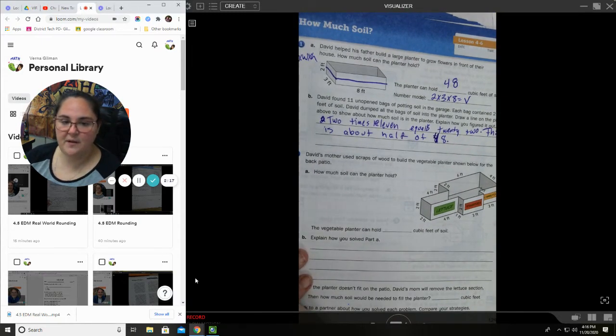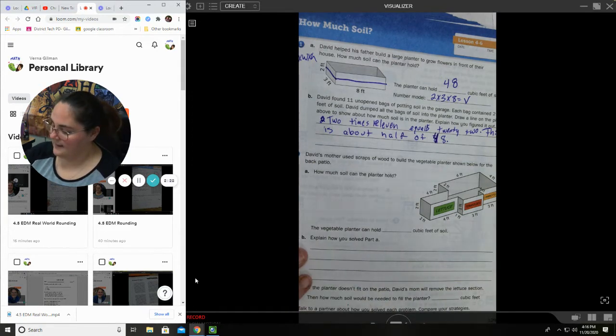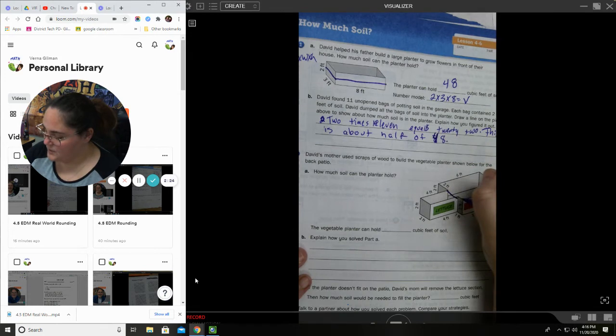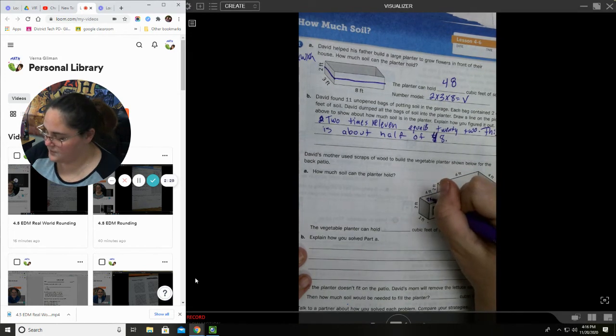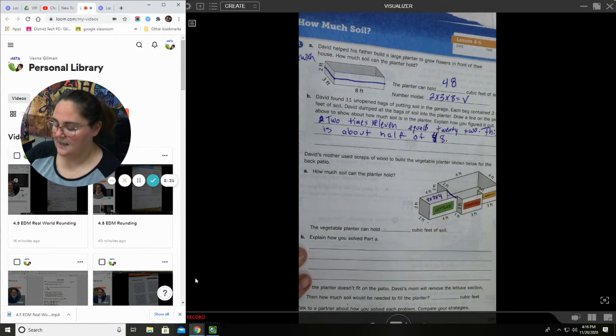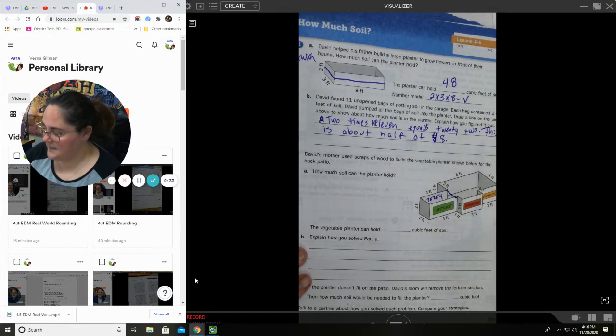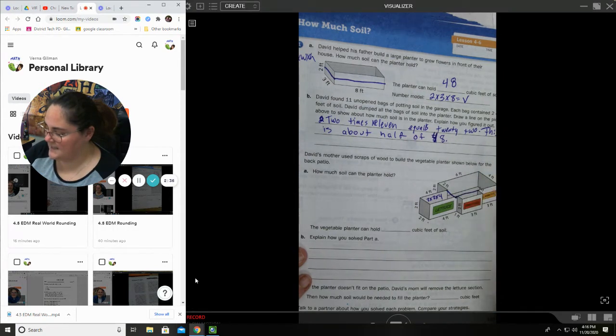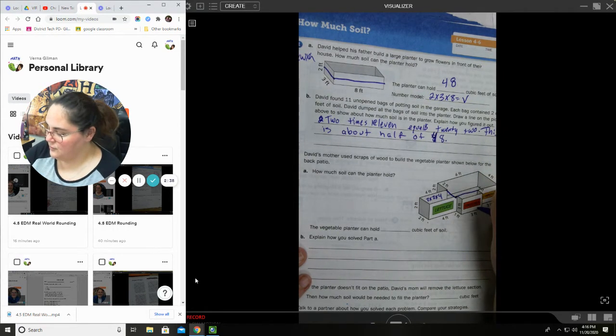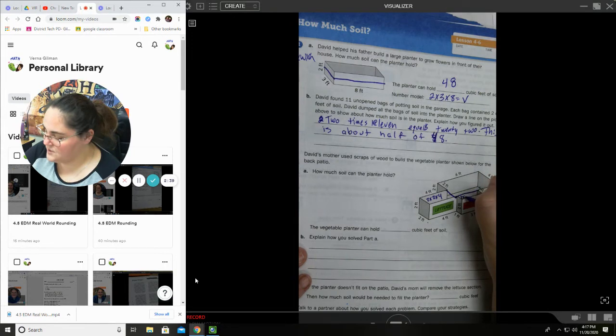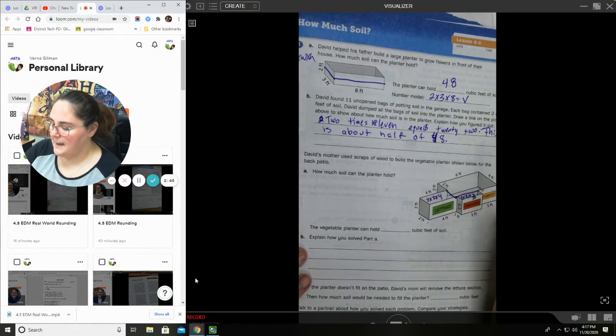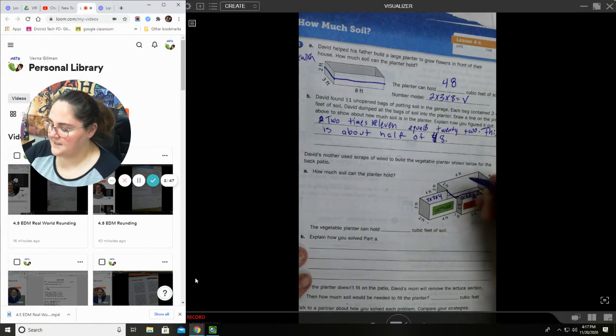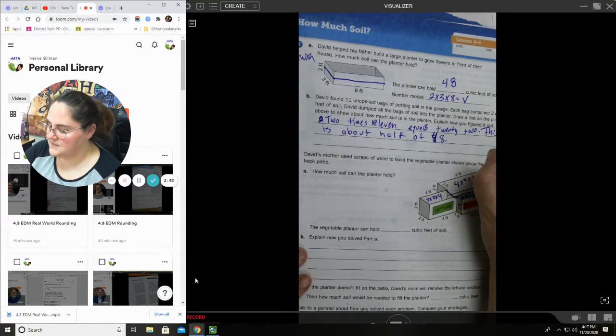David's mother used scraps of wood to build a vegetable planter shown below. How much soil can the planter hold? All right, I'm going to split it into pieces. So, for this piece right here, it's going to be 2 feet by 2 feet by 4 feet. So, 2 times 2 times 4. All right, I'm going to split this one by itself. It's going to be 1 by 2 by 3. So, 1 times 2 times 3. And then the last would be this rectangle. 4 by 2 by 6. So, 4 times 2 times 6.